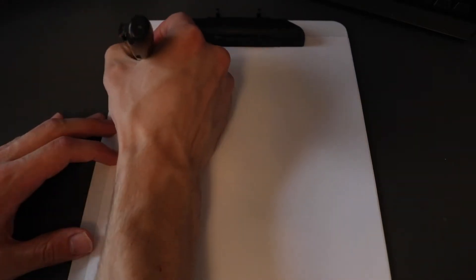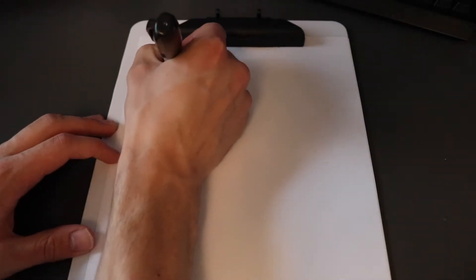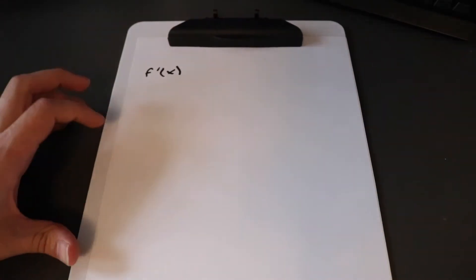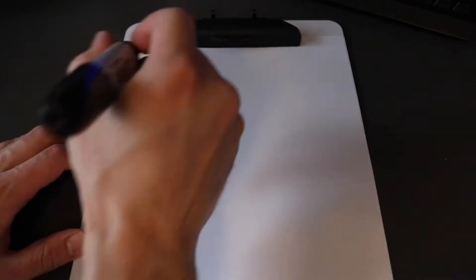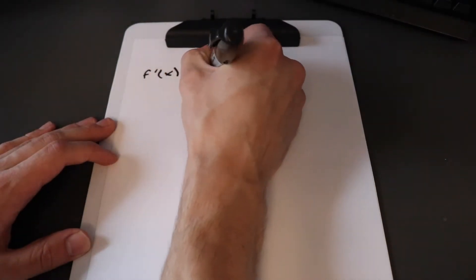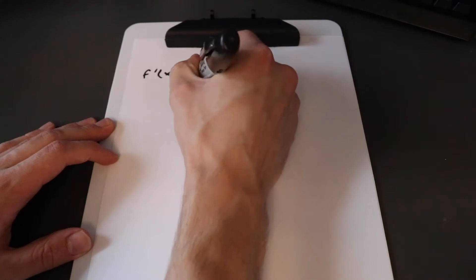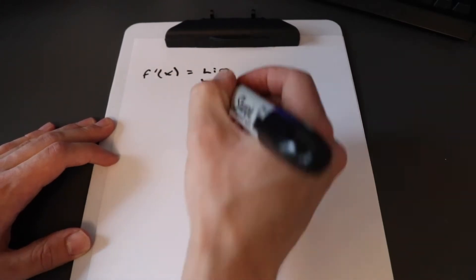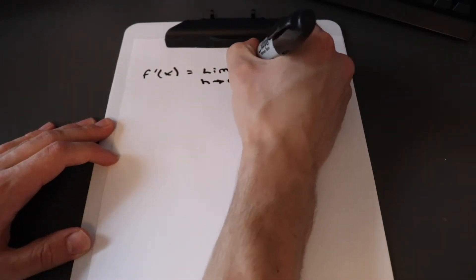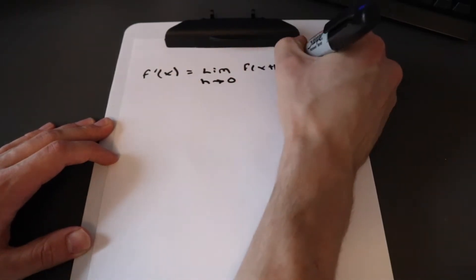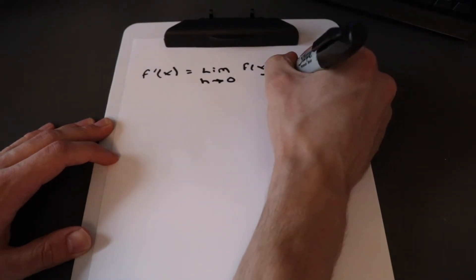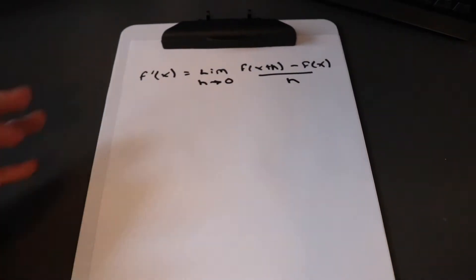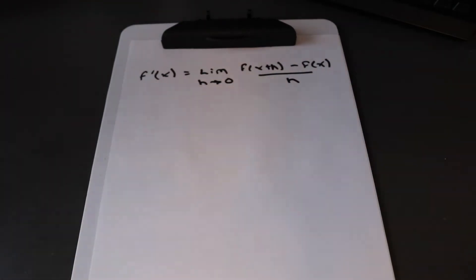So what is the definition of a derivative? It's f prime of x — that's the derivative of the function. It's defined as the limit as h approaches zero of f of x plus h, minus f of x, all over h. That's our definition of a derivative.